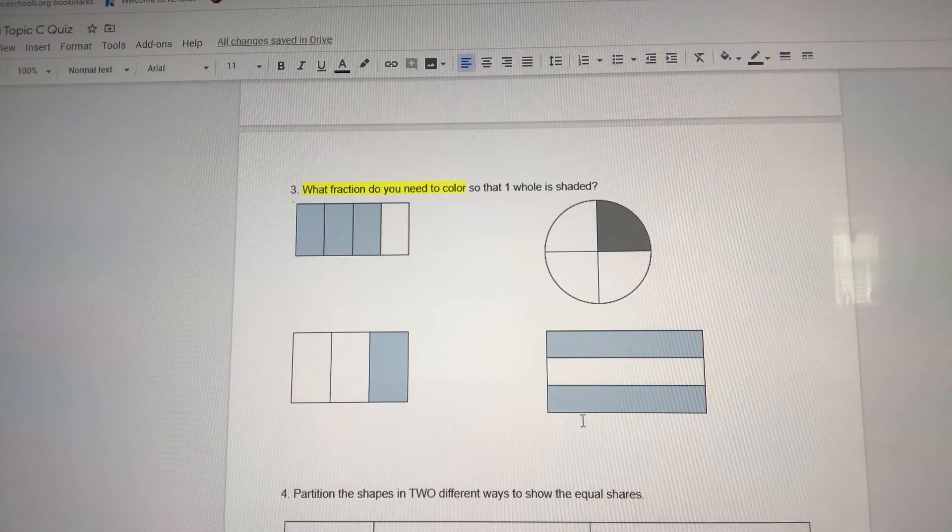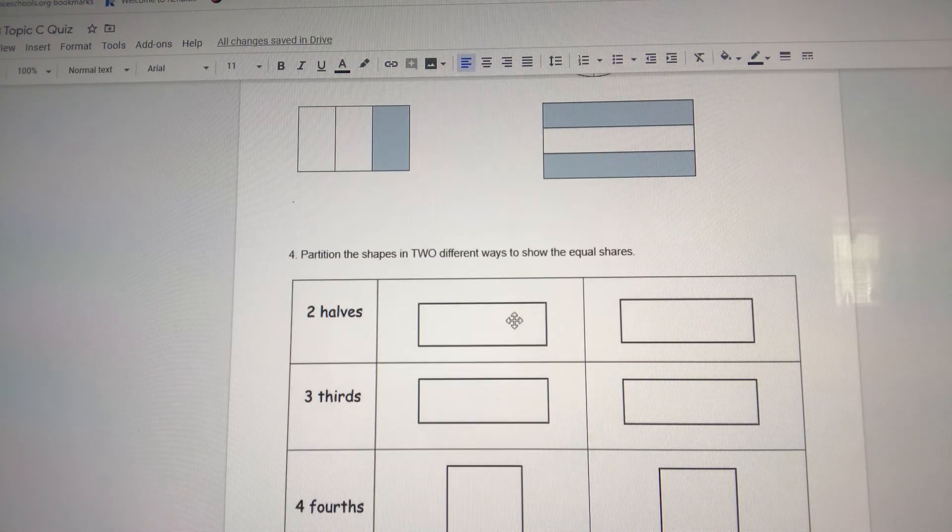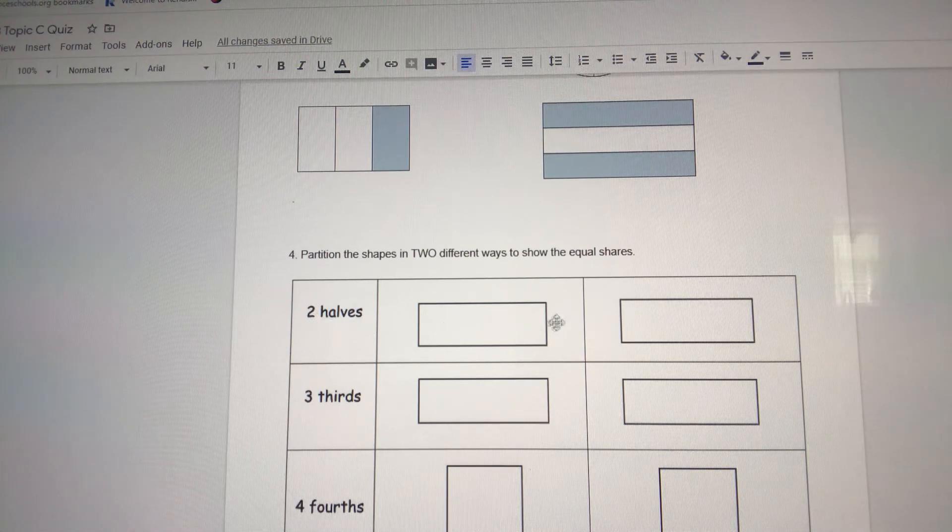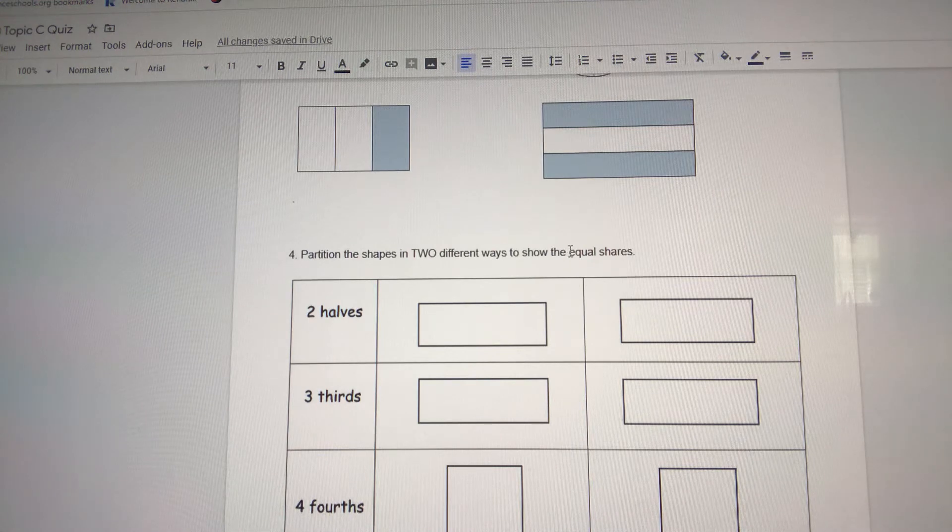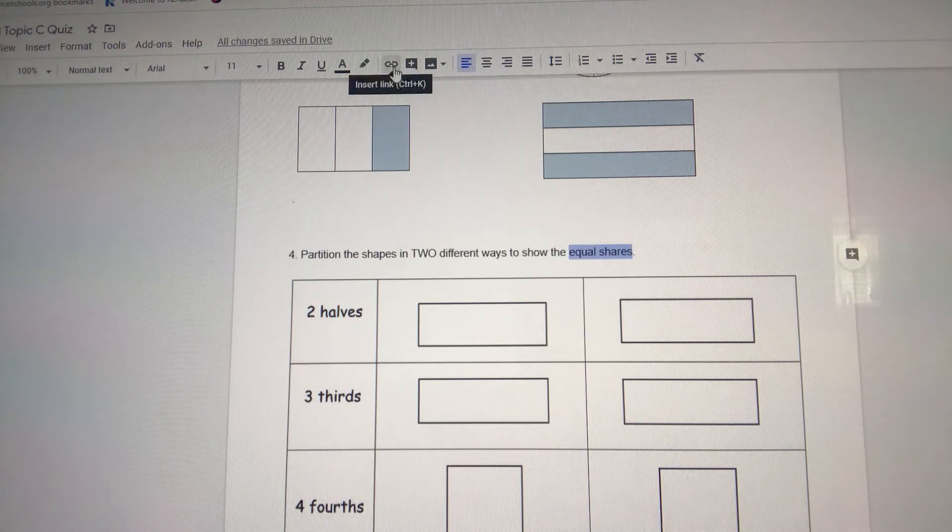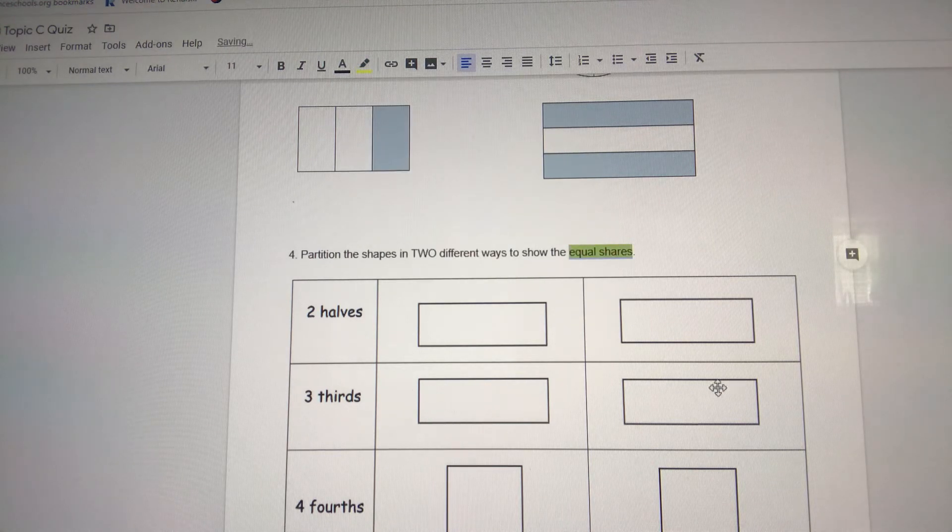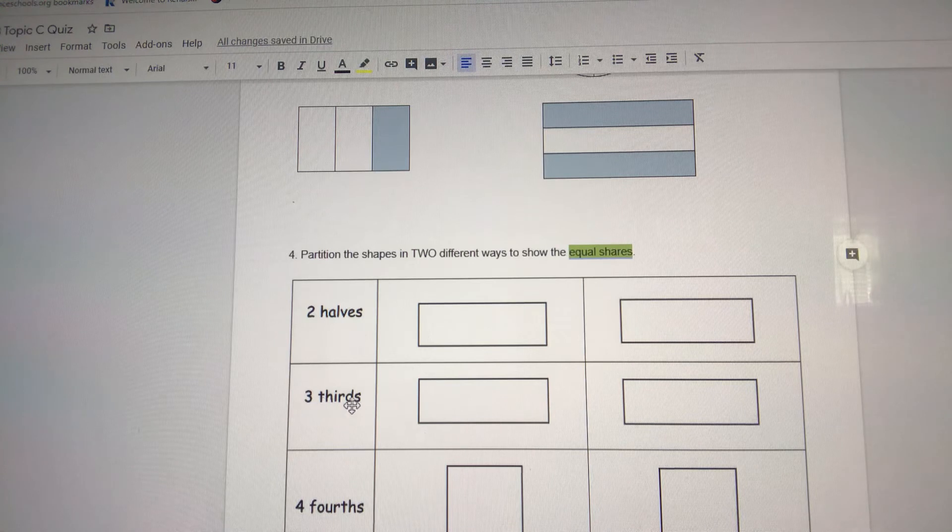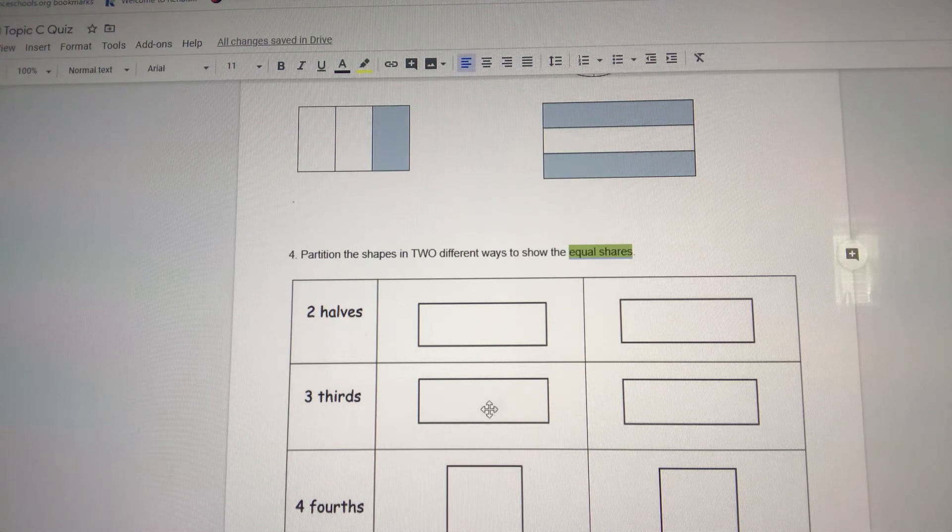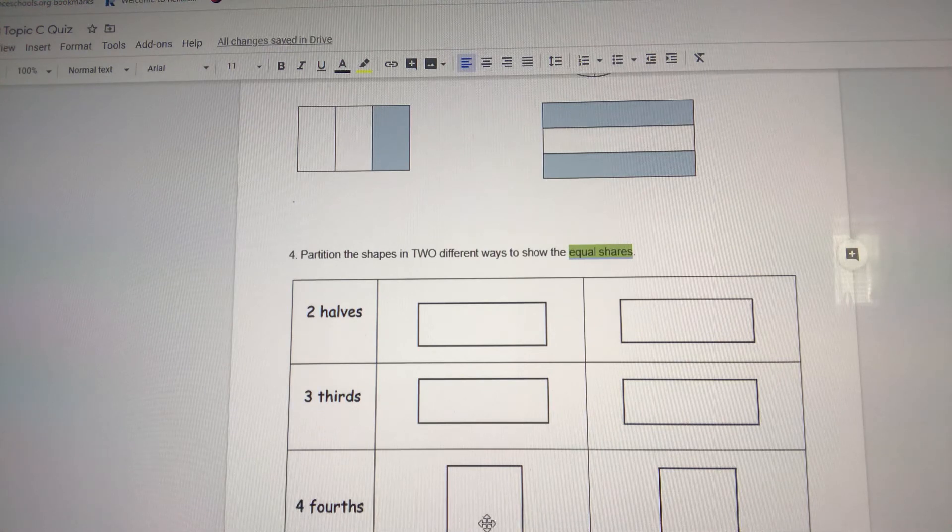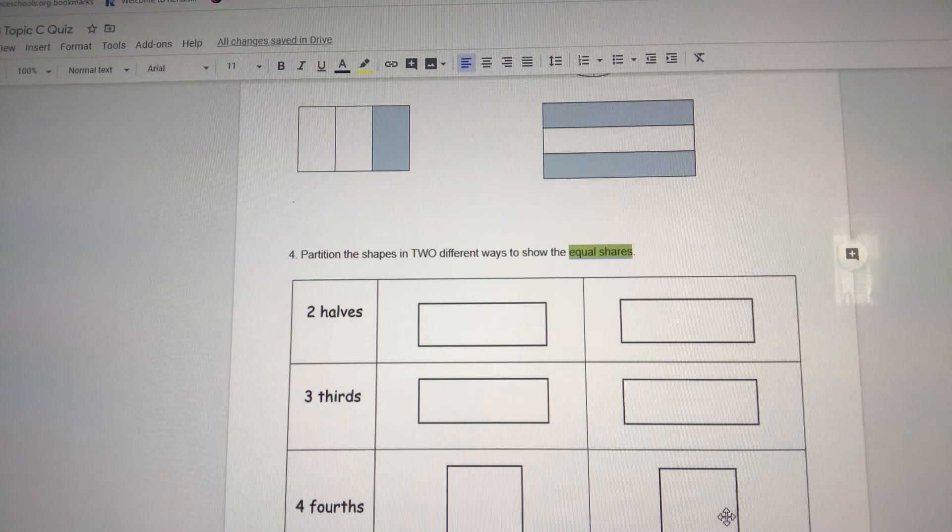For the last question on the test, you have two rectangles. They want you to show halves two different ways. Remember, halves have to be equal shares. For this rectangle, they want you to show thirds in two different ways. For this square, they want you to show fourths that shows equal shares two different ways.